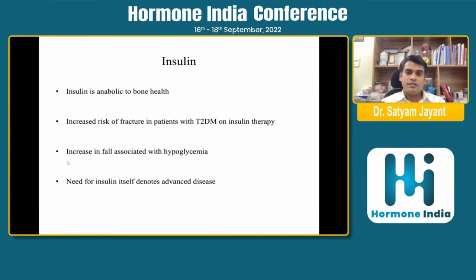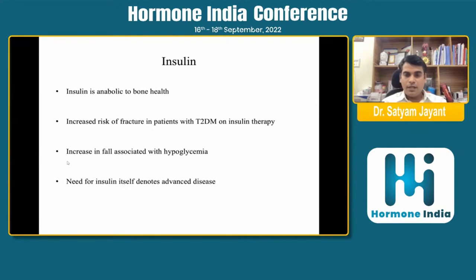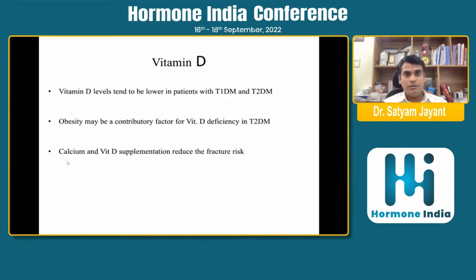Insulin is anabolic to bone health, but studies show that with insulin use the risk of fracture is increased — again because of concurrent hypoglycemia. Additionally, insulin use in diabetic individuals suggests diabetes is in an advanced state, which may contribute to increased fracture risk. Vitamin D levels tend to be lower in both type 1 and type 2 diabetic patients, with obesity being a contributory factor. Calcium and vitamin D supplementation should be given to all patients at risk for fracture.